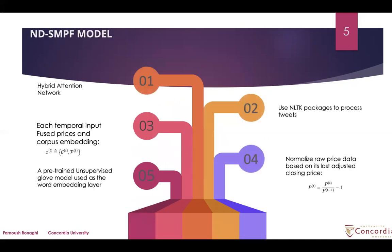We use a hybrid attention network. We use the NLTK package to process tweets with particular Twitter-mode processing including tokenization and hashtags. NLTK is an open-source library that provides ready-to-use packages to help natural language processing solve linguistic problems. Each temporal input fuses price and corpus embeddings, constructing X with corpus embedding C and prices P. We normalize the raw price data based on its last adjusted closing price.